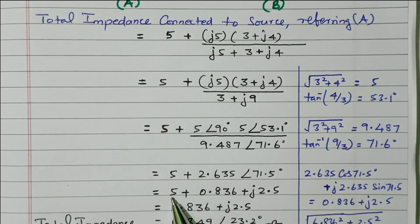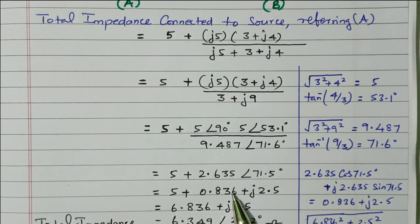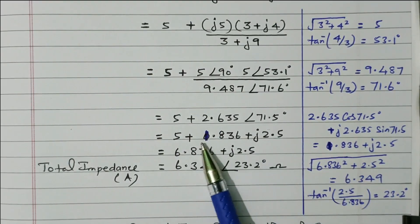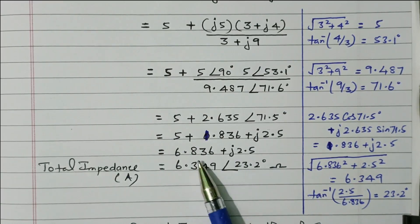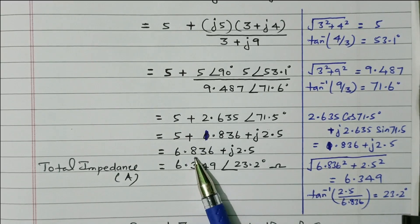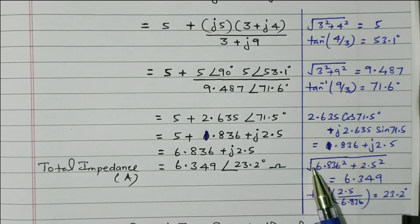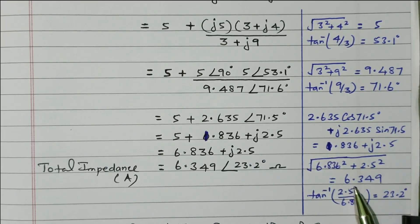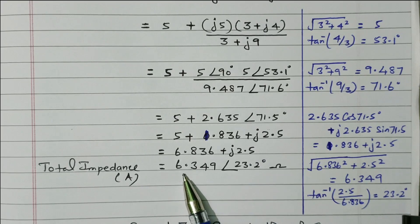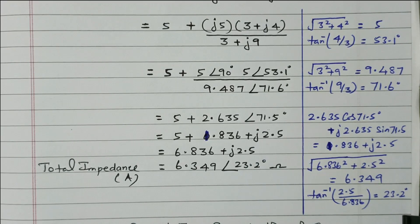Now we can easily add these values. 5 plus 0.836 gives 6.836, plus J2.5. So the total is 6.836 plus J2.5. Again this is in rectangular form and should be converted into polar form. Square root of 6.836 squared plus 2.5 squared equals 7.29 — wait, this is 7.29, calculated as approximately 7.29. The angle is tan inverse of 2.5 divided by 6.836, which gives approximately 23.2 degrees. The total impedance of network A is approximately 6.349 with an angle of 23.2 degrees.